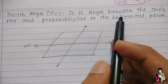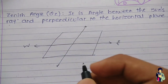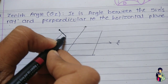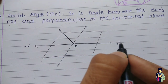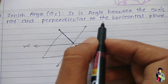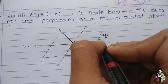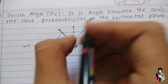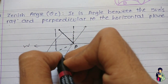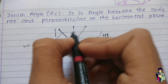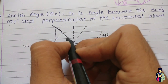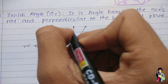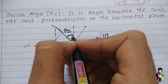Now, what is the zenith angle? It is the angle between the sun's rays and the perpendicular to the horizontal plane. The sun's rays come towards point P, and we consider a plane perpendicular to the horizontal plane. The angle between the sun's rays and this perpendicular plane is known as the zenith angle, denoted by phi_z.